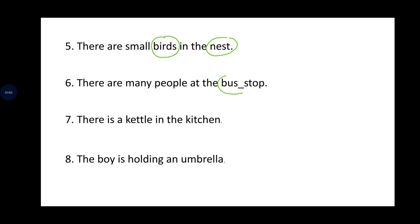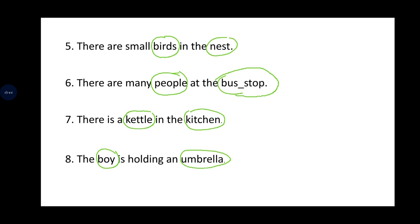'There are many people at the bus stop.' People means persons, so people is a naming word. Bus stop is a place, so bus stop is also a naming word. 'There is a kettle in the kitchen.' Kettle is a thing, kitchen is a place — both are naming words. 'The boy is holding an umbrella.' Boy is a person — naming word. Umbrella is a thing he is holding — umbrella is also a naming word.